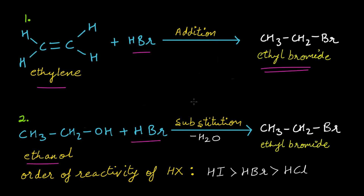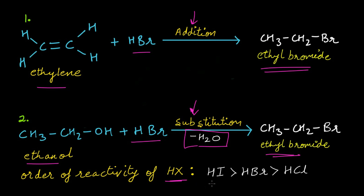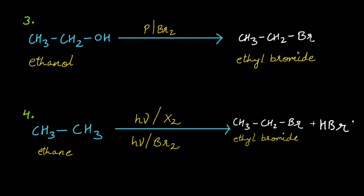The second method is when ethanol is treated with HBr, a substitution reaction takes place and you will get ethyl bromide, and water will be removed as a byproduct. The order of reactivity for halogen acids is HI > HBr > HCl — remember that.